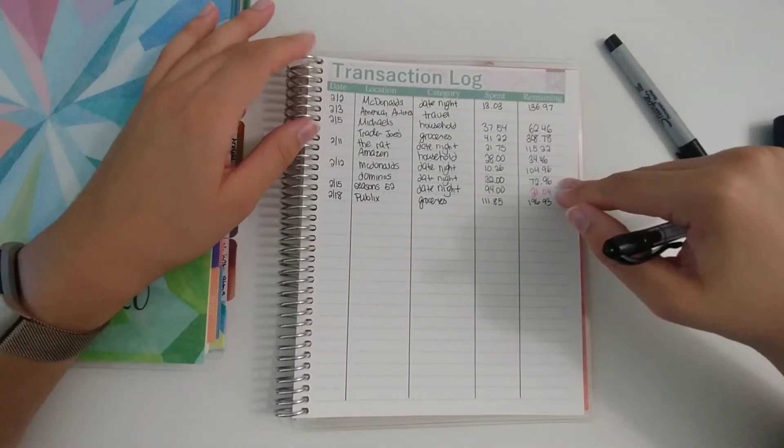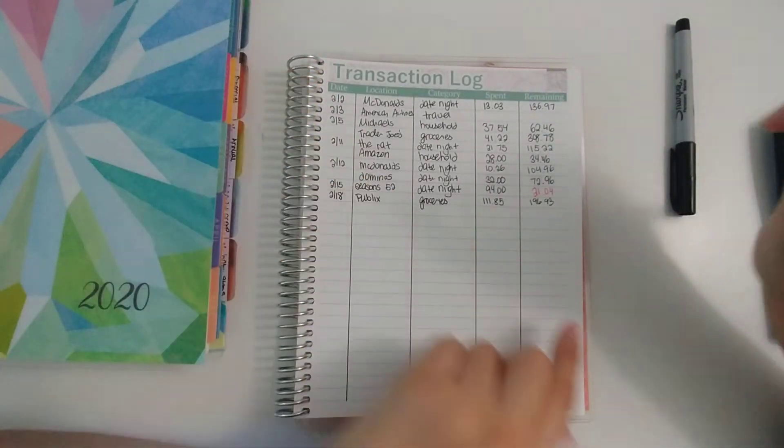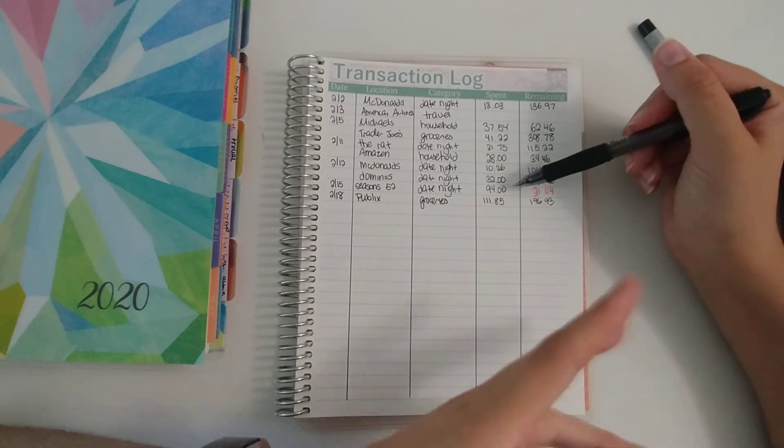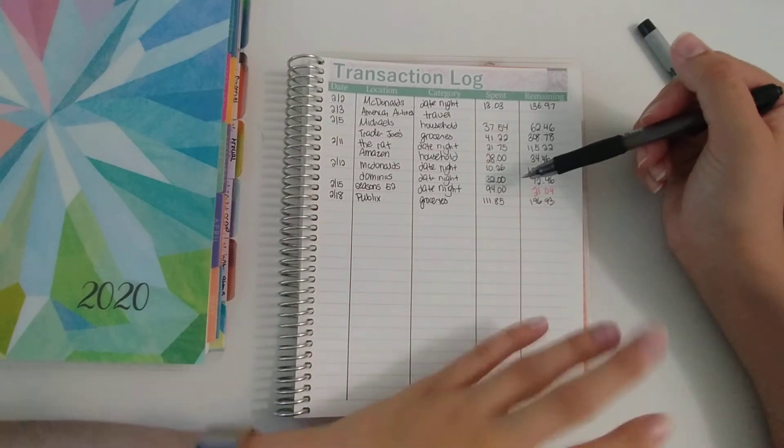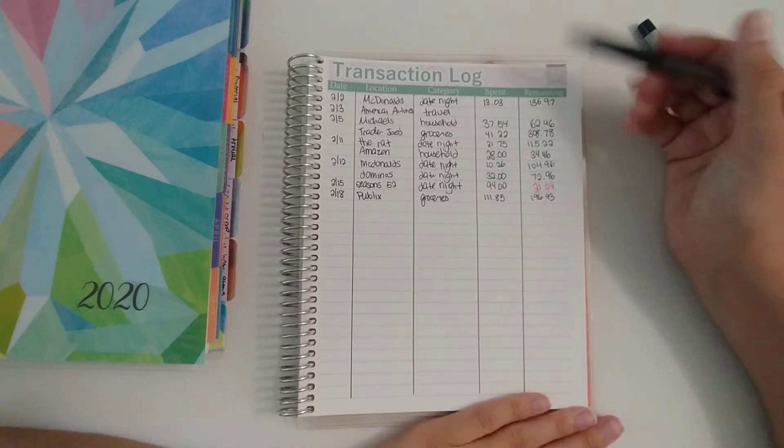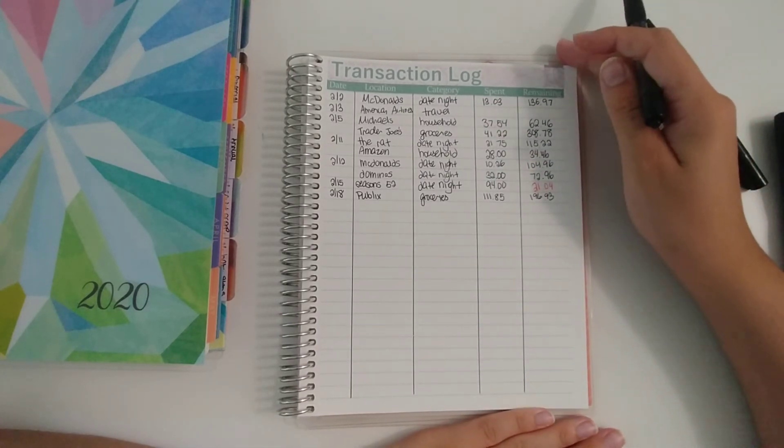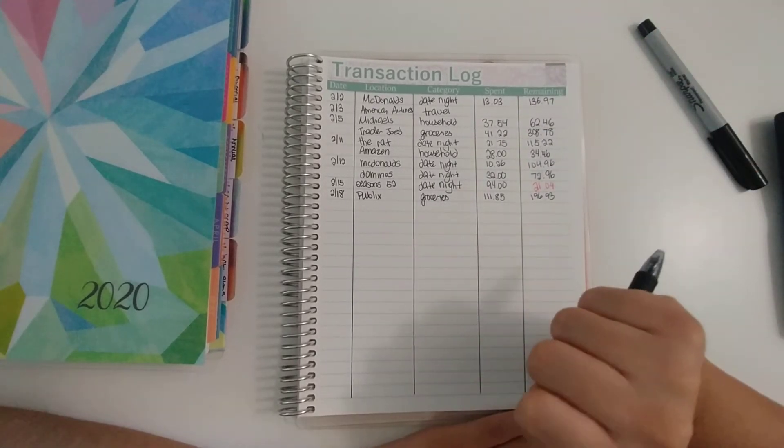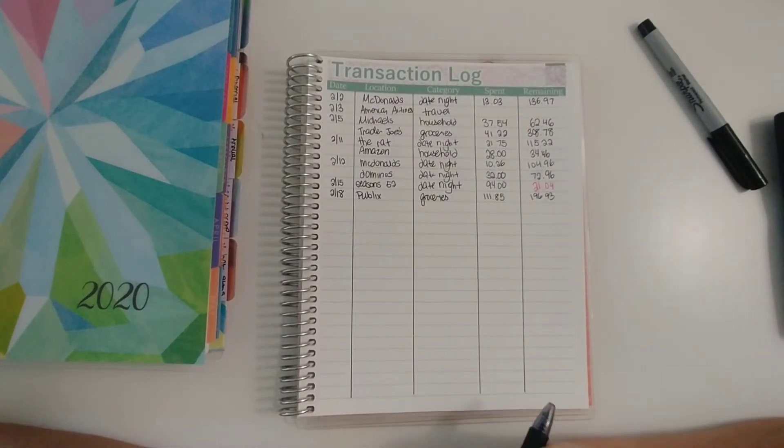And then as you can see here, these are our transactions for the month. The only category that we are over so far is date night, because for Valentine's Day we forgot to budget that in and take that into account for our budget. So we under-budgeted the amount that we should spend, so we went $20 over-ish, which isn't terrible. But we just had to keep an eye on it for the remainder of the month.